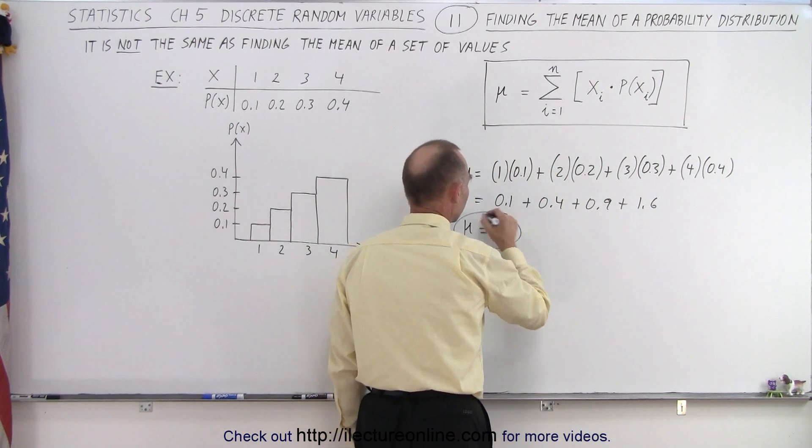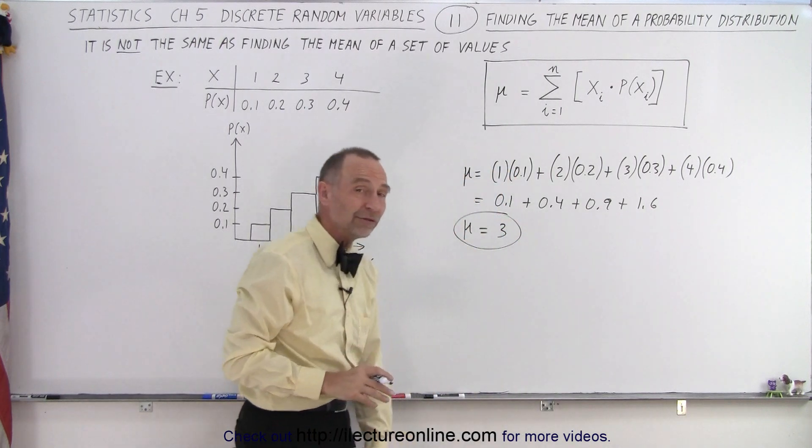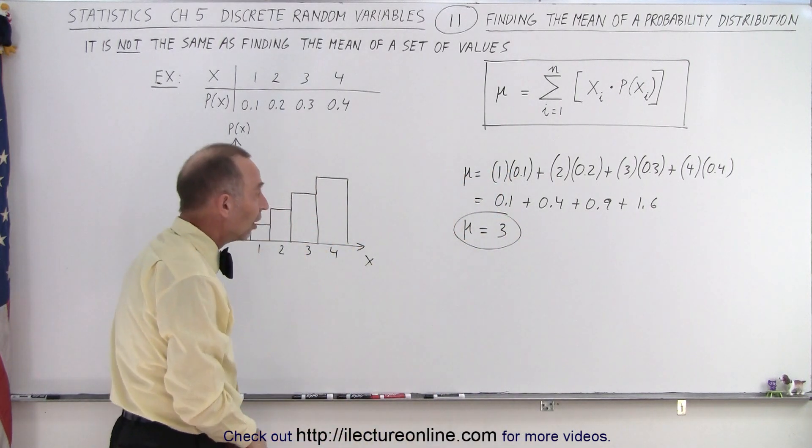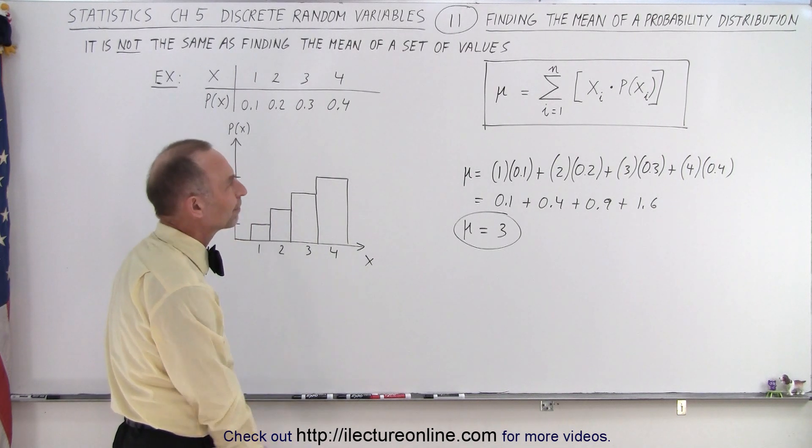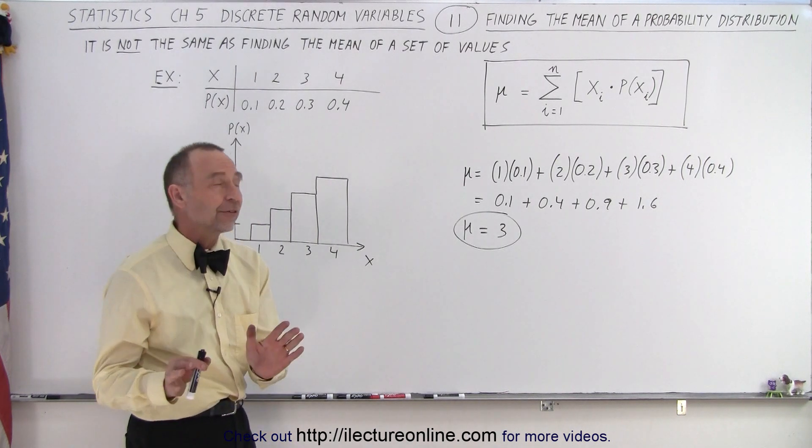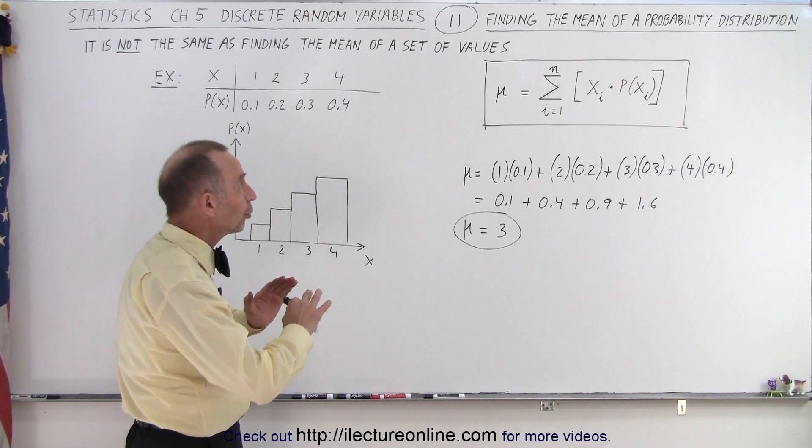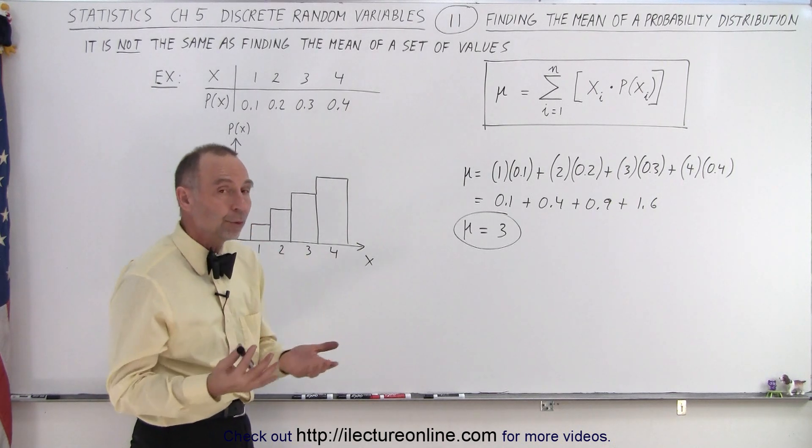So here we are. That is not the same as 2.5, the average values of the possible values for x, or the mean for all the possible values for x. The reason why it's different is because it is indeed what we call the mean of the probability distribution.